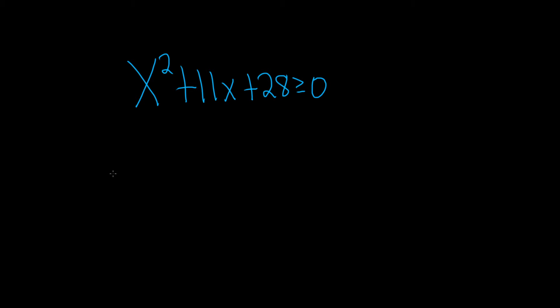In this problem, we're going to solve this inequality using something called the test point method. The test point method says that you first want to make sure that you have 0 on one side, and then you want to make sure you have a single term on the other side. So we don't quite have that here. So to fix that, we should be able to factor this.